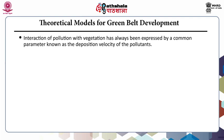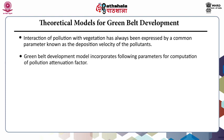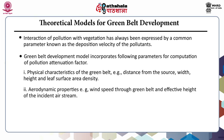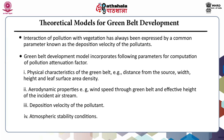The interaction of pollution with vegetation has always been expressed by a common parameter known as the deposition velocity of the pollutants. The green belt development model incorporates the following parameters for computation of pollution attenuation factor: physical characteristics of the green belt such as distance from the source, width, height and leaf surface area density; aerodynamic properties like wind speed through the green belt and effective height of the incident air stream; deposition velocity of the pollutant; and atmospheric stability conditions.